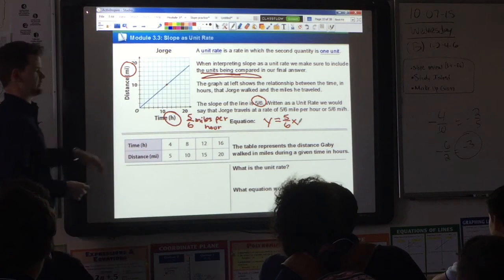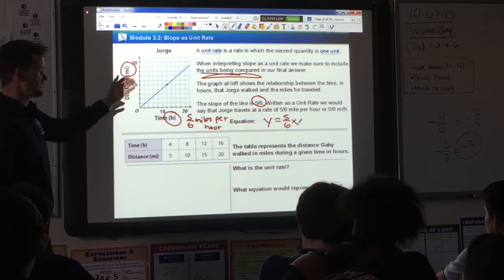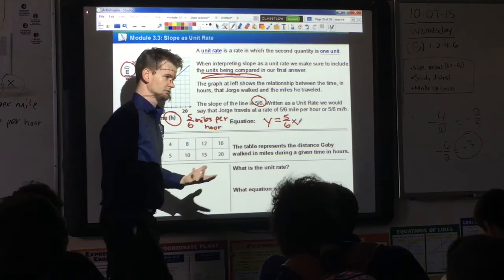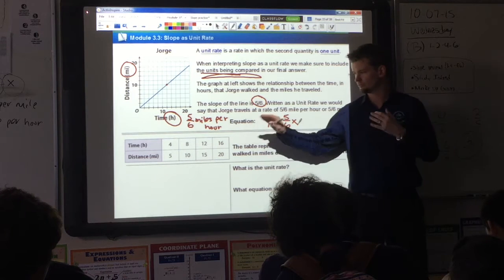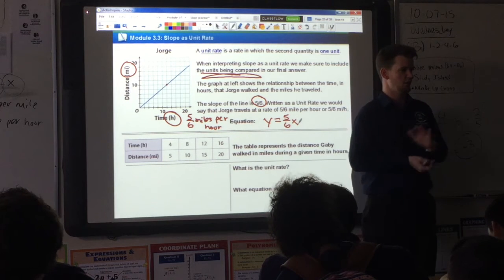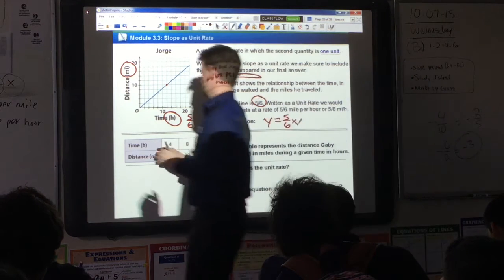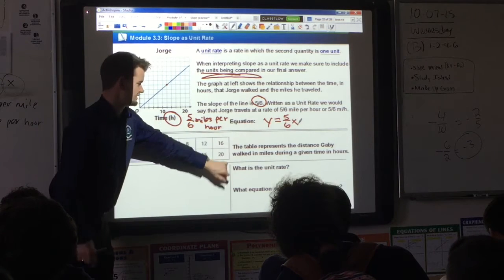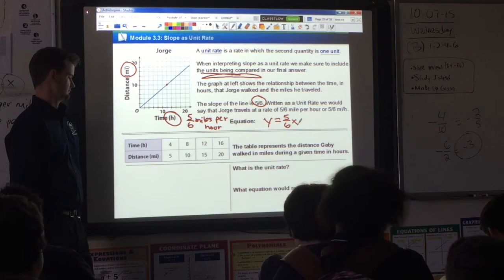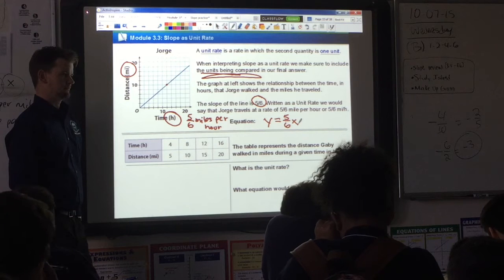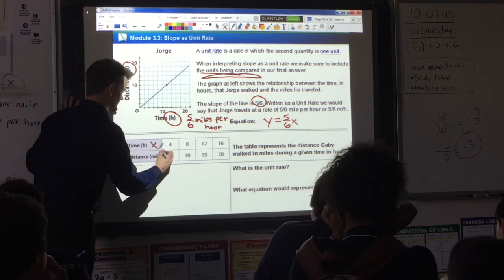This table represents the distance Gabby walked in miles during a given time in hours. We want to express this as a unit rate. In order to do that, I first need to find the slope. The good thing is here, they gave you your points. But we need to know what the x is, what the y is. So we need to identify the input and the output. Looking at this scenario, time is the input. We input some time, we're going to get out some distance. So this is my x, this is my y.